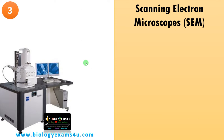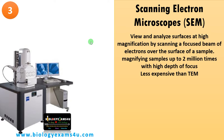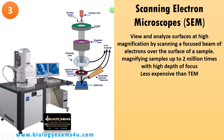Third in the list is the scanning electron microscope (SEM). The illumination source is a beam of electrons. It is used to view and analyze surfaces at high magnification by scanning a focused beam of electrons over the surface of a sample, magnifying samples up to 2 million times with high depth of focus. An electron gun generates electrons, focused through magnetic lenses, with scanning coils directing the beam; secondary electrons scattered from the specimen are detected to create a 3D image.